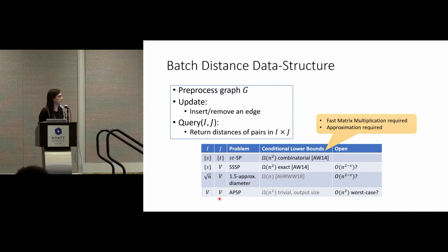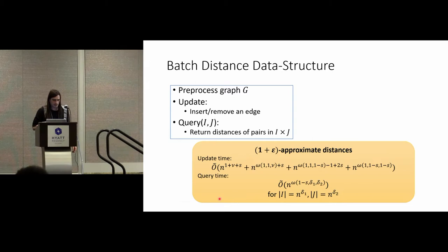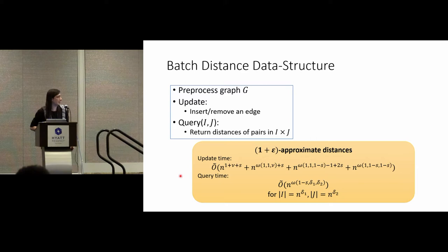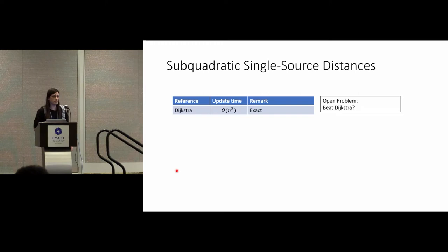We could also compute all-pair distances by setting I and J to be all the nodes in our graph, and there too exist some open problems. So let's look at our result — watch out, it looks a bit scary. We have a 1+ε approximate distance data structure for this batch distance problem. The update time cannot be further simplified unless fast matrix multiplication happens to run in N-square time. The main point is that we can trade off between update and query time, and we heavily use fast matrix multiplication.